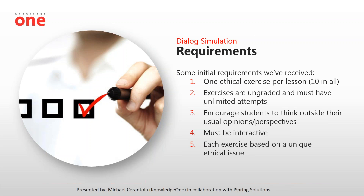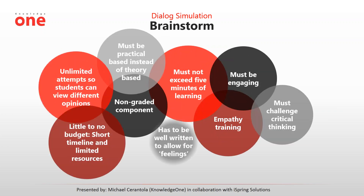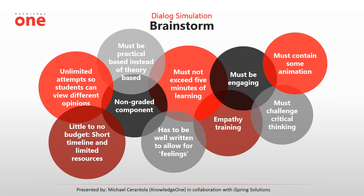After all that was assigned, we got in a room and brainstormed. The non-graded component had to be empathy training in natural processes, must not exceed five minutes of learning, must be engaging, must contain some animation so it's not too static, it has to be more practical-based rather than the theory-based content at the beginning of the lesson, unlimited attempts so students can view different options, and it has to be well-written to allow for the emotional side. My most favorite aspect of a brainstorm: for those familiar with academia, there's little to no budget — short timeline, limited resources, get it done as quickly as possible.